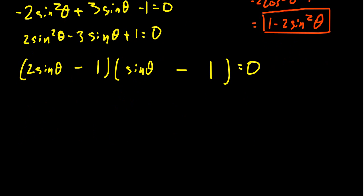Now that we've correctly factored, we set each and every one of these factors equal to zero and solve. We have two sine theta minus one equals zero. That means two sine theta equals one, which means sine theta equals one half.